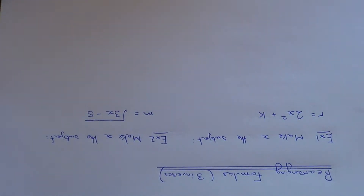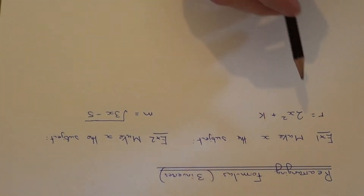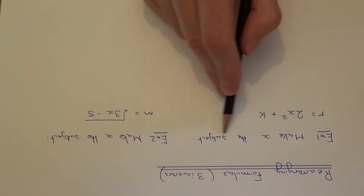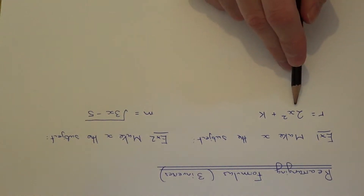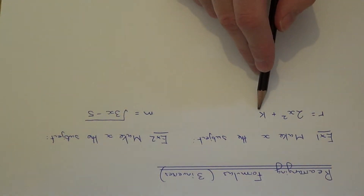Today I'm going to show you a couple of examples on how to rearrange a formula which require three inverses, and these ones involve doing square roots and squares. Let's have a look at example 1. We need to make x the subject of r equals 2x squared plus k.